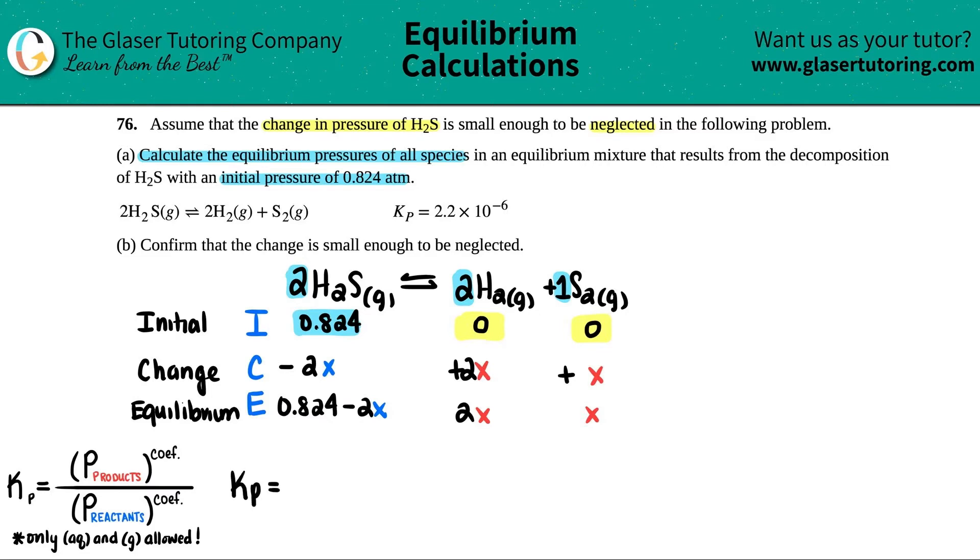Kp equals, now just remember, only gases and aqueous are allowed. But it looks like we have all gases here, so that's all good. I got two products. So I need to do the pressure of H2. And it has to be raised to the coefficient. There was a 2 here. So I have to raise this to the second times by the pressure of S2, right? Okay. And this has a 1 coefficient on the front. So technically you would raise this to the first, but that's fine with me.